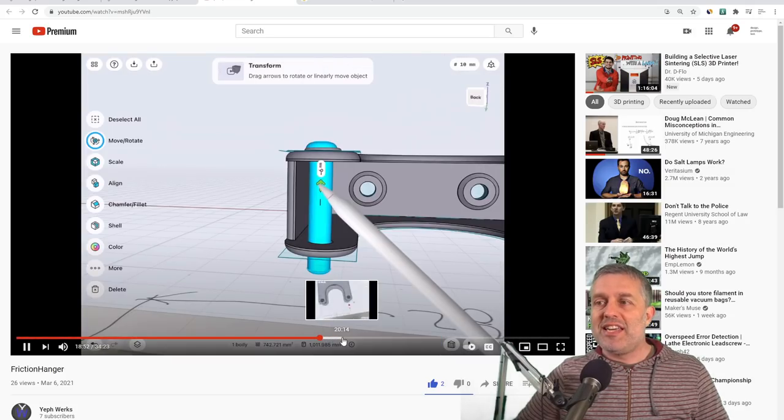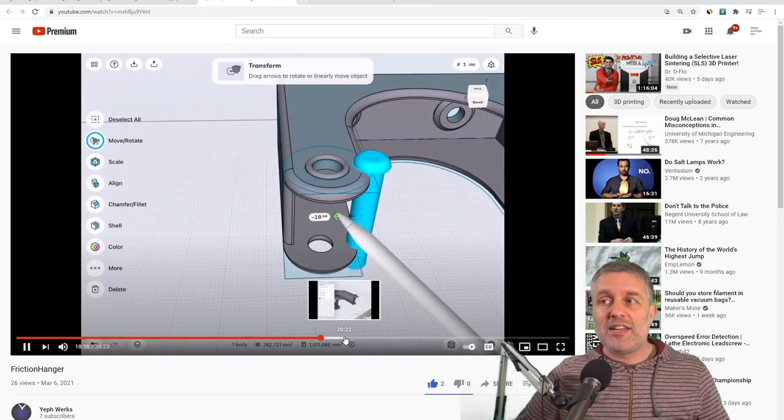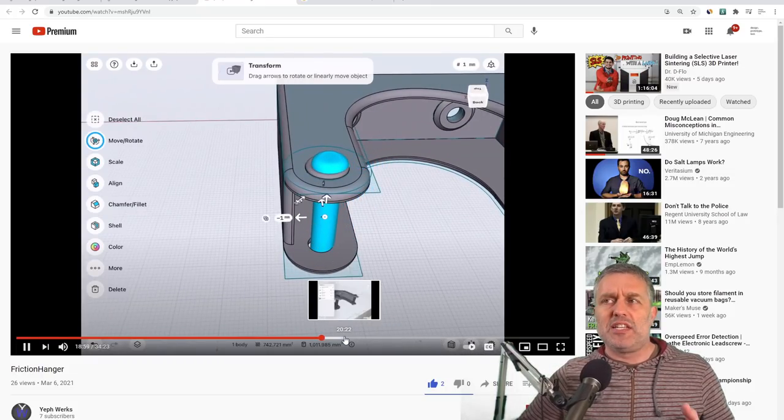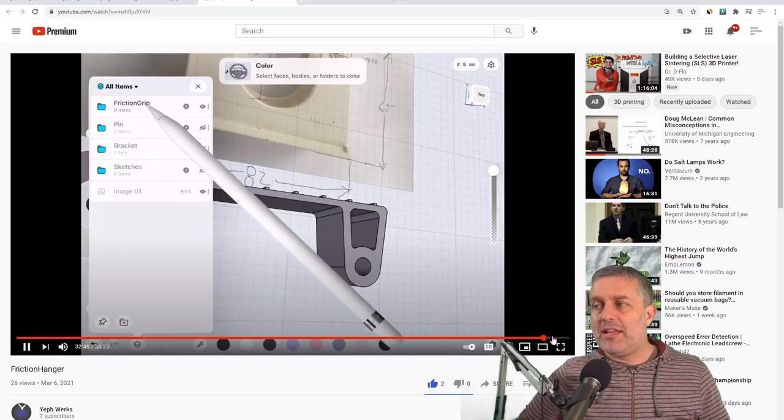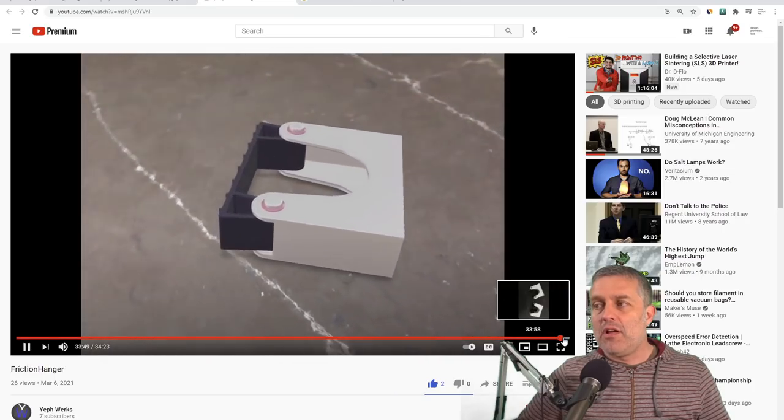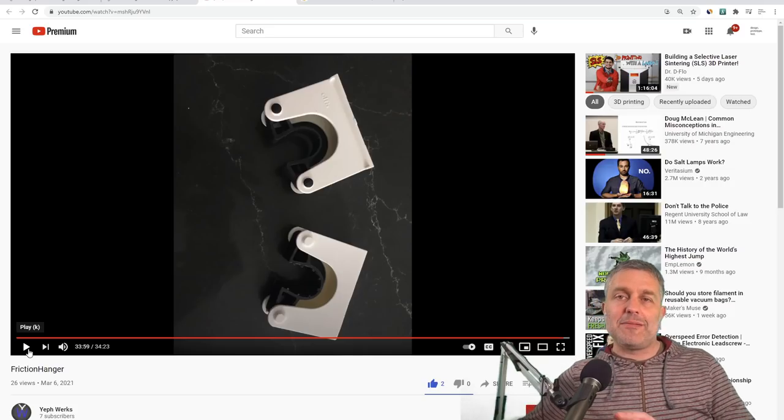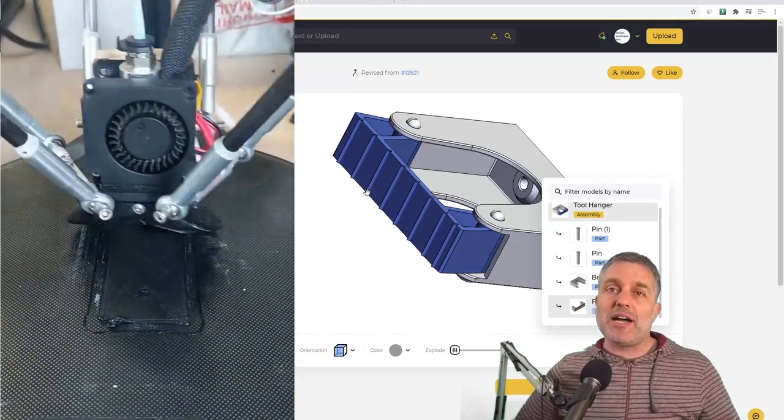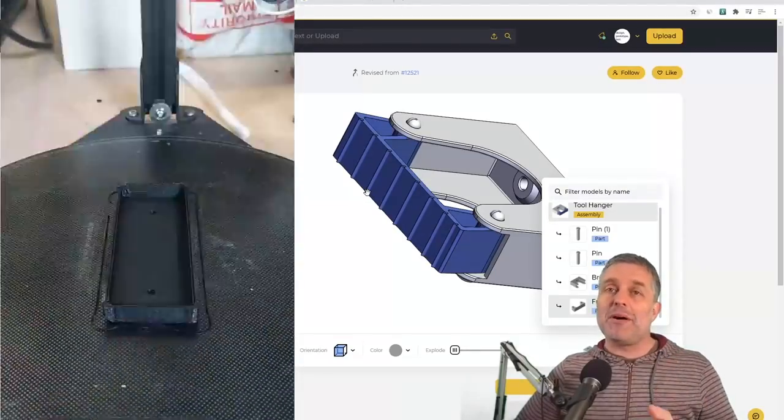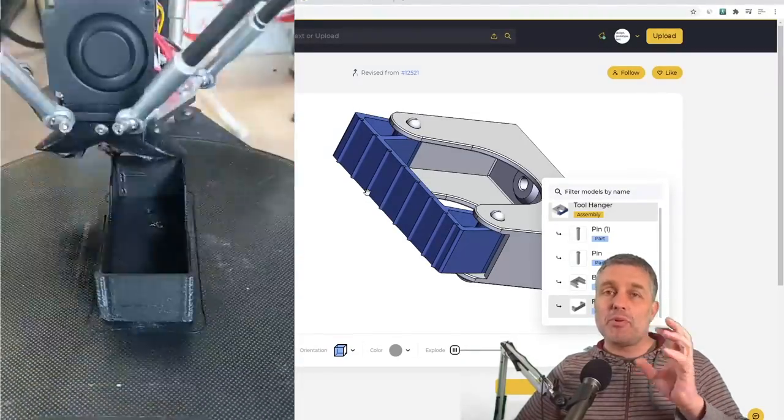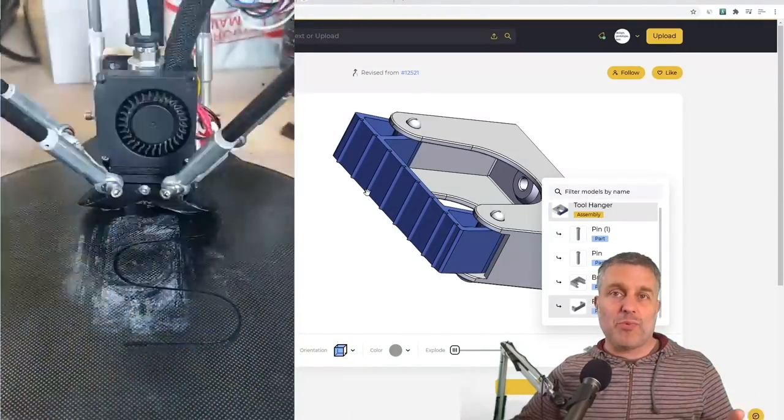He basically just copied the injection moldable part in Solidworks. The final result looks exactly like the injection moldable part, and to me that's all wrong. This part needs to be optimized for 3D printing so that support material is either eliminated or minimized, and we need to print it in such an orientation that the strong axis gives the part the strength where it needs it.